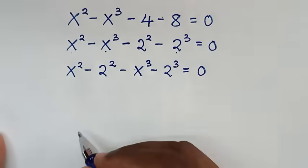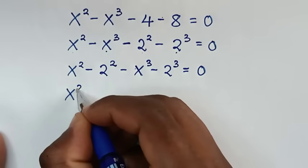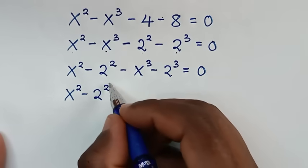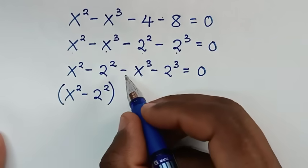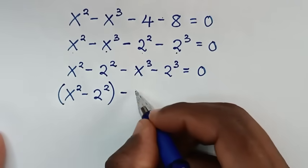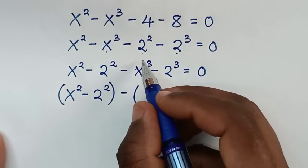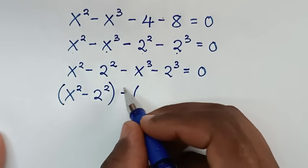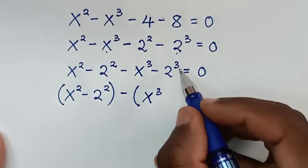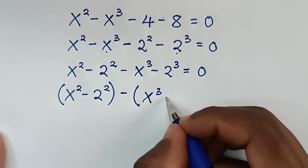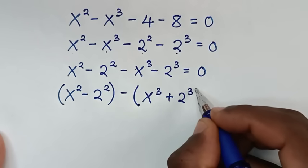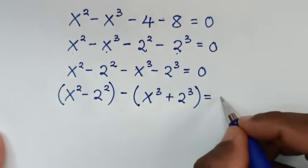In the next step we put x cubed in a bracket, and the negative is common in the second bracket, so we take negative out. Negative x cubed divided by negative gives x cubed, and negative 2 cubed divided by negative gives plus 2 cubed. The bracket equals 0.